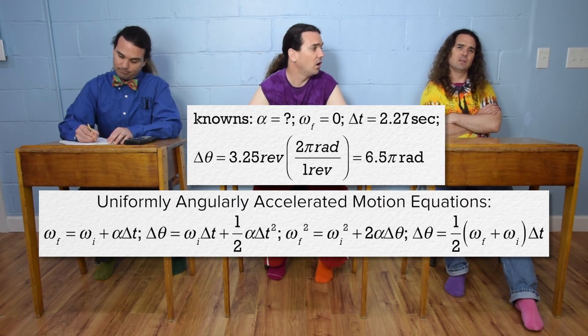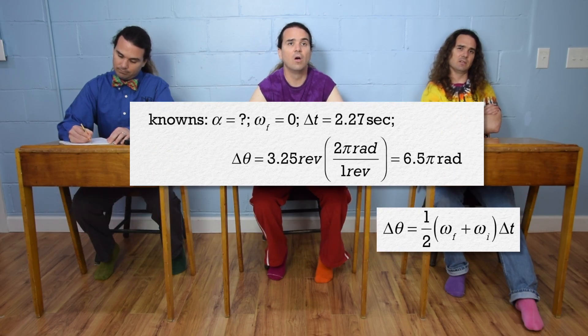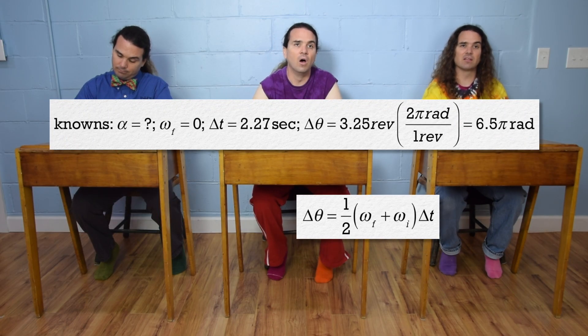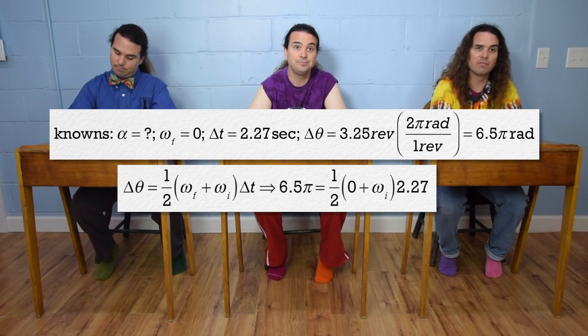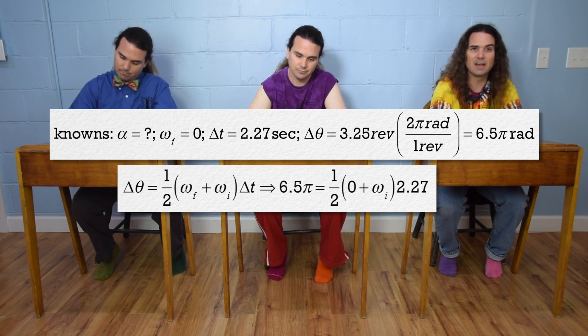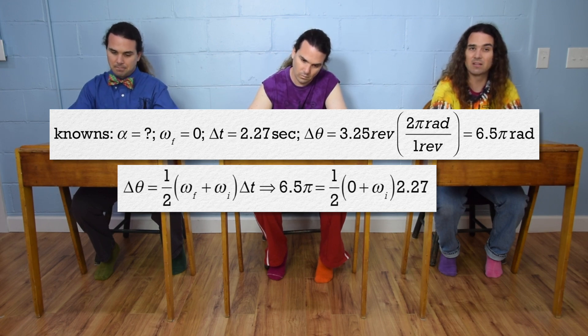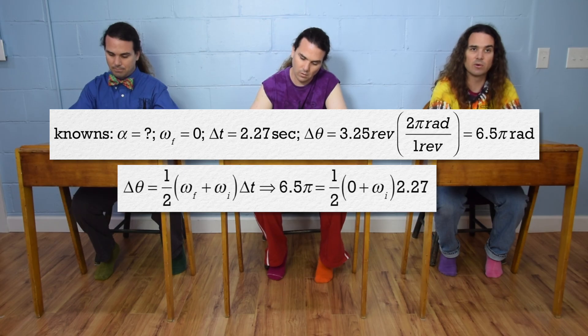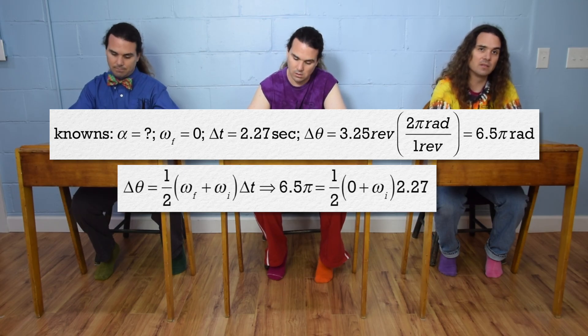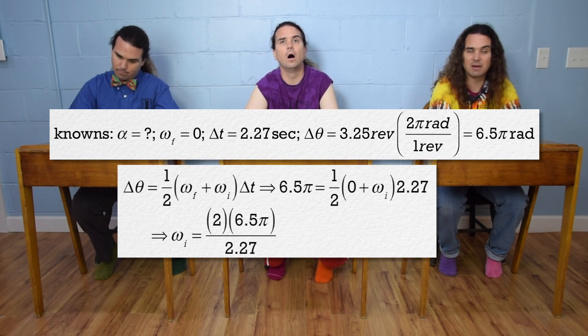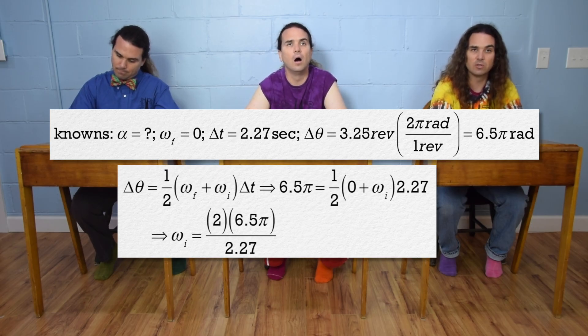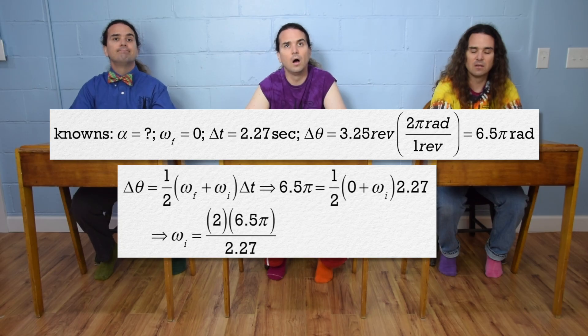So angular displacement equals one-half times angular velocity final plus angular velocity initial times change in time, or 6.5 pi equals one-half times zero plus angular velocity initial times 2.27. That means omega initial equals 2 times 6.5 pi divided by 2.27 which is 17.9915 radians per second.